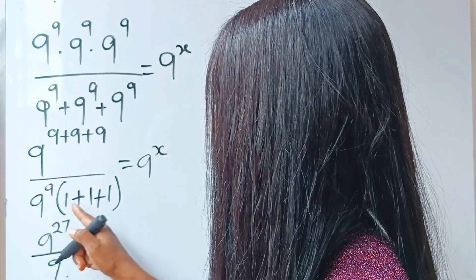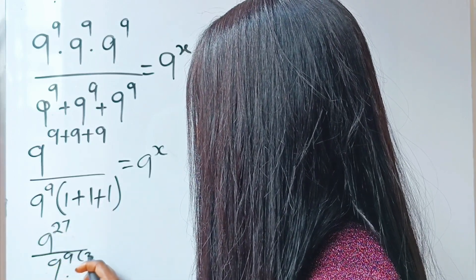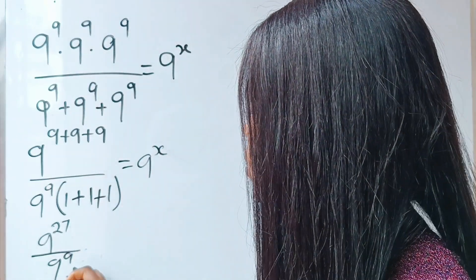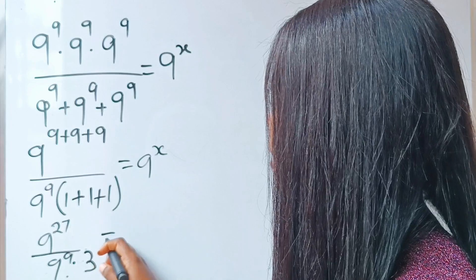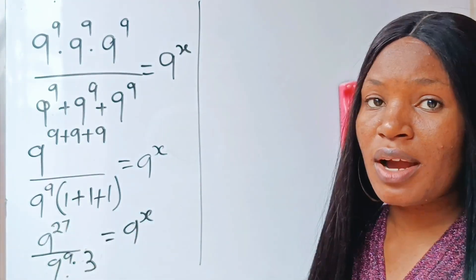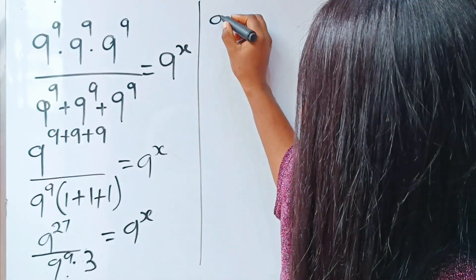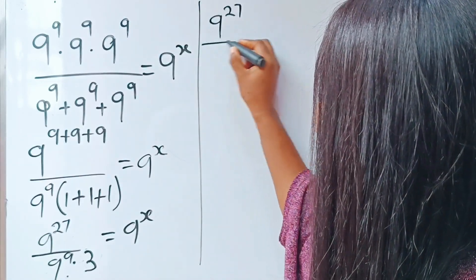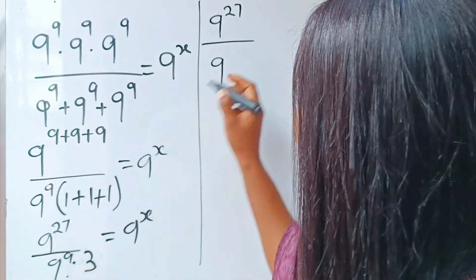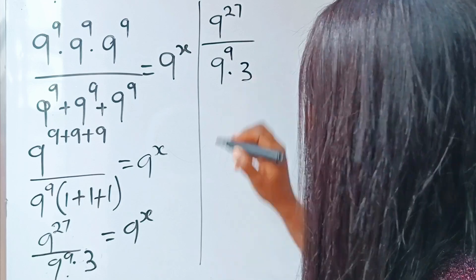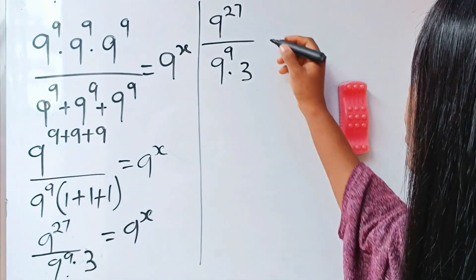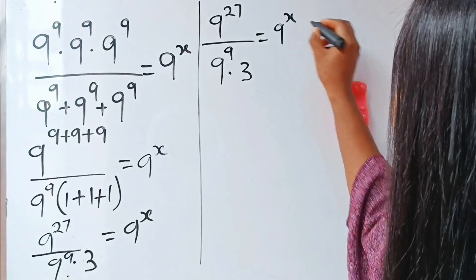Divided by 9 to the power of 9, multiplied by 3. Everything is equal to 9 to the power of x. What we have is 9 to the power of 27 divided by 9 to the power of 9, multiplied by 3. Because 1 plus 1 plus 1 will give us 3. This is equal to 9 to the power of x.